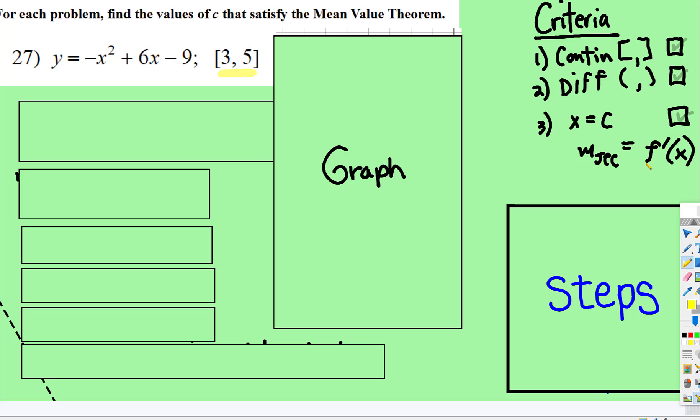The slope of the secant will be parallel to the slope of the tangent, and these will be the steps. So you have to do the criteria check first.